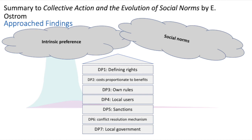If intrinsic preferences and social norms are not enough, there are also restrictions that can be implemented to increase collective action. For example, design principle 1 defines who has the right to withdraw from the resource; design principle 2 assigns costs proportionate to benefits; design principle 3 allows users to create their own rules. Other design principles — as shown on the slide — include design principle 7, which focuses on creating an effective governing regime such as local government.